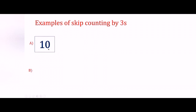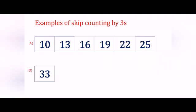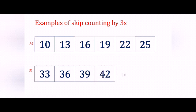Let's start with 10. What number do I have to add? 3. So 10 plus 3 is 13, 13 plus 3 is 16, then 19, 22 and 25. Let's see one more example starting at 33. Again I have to add number 3. So 33 plus 3 is 36, 39, 42, 45 and 48.